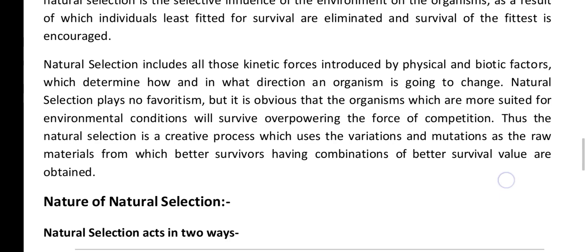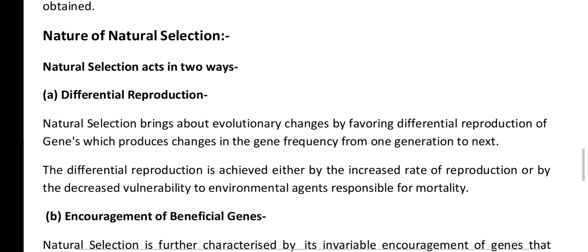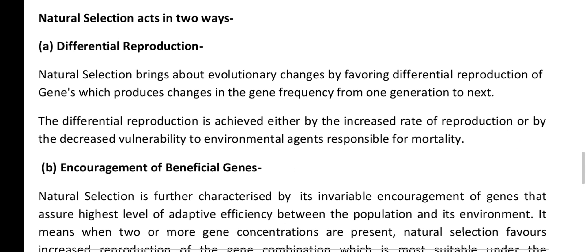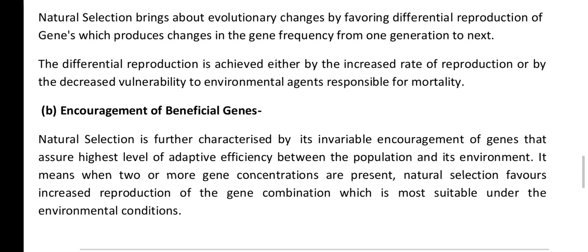Natural selection acts in two ways. First, differential reproduction: natural selection brings about evolutionary changes by favoring differential reproduction of genes, producing changes in gene frequency from one generation to the next, achieved either by increased reproduction rates or decreased vulnerability to environmental mortality agents. Second, encouragement of beneficial genes: natural selection invariably encourages genes that assure the highest level of adaptive efficiency between the population and its environment, favoring the gene combination more suitable under the prevailing environmental conditions.